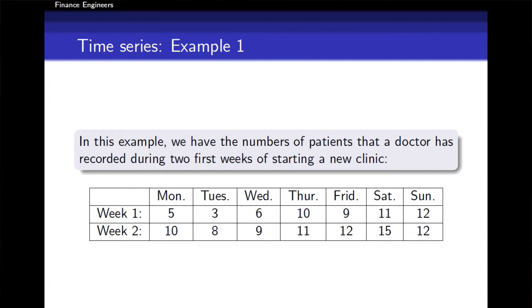As we can see, this time series has a period of one day because the data were recorded daily. Also, the data are of the same type, which means the data here is the number of patients that has been recorded per each day.